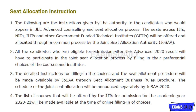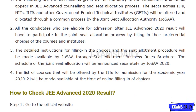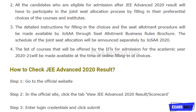The detailed instructions for filling choices and the seat allotment procedure will be made available by JOSAA. You have to check the detailed instructions and the brochure provided by them, which will include the rules, regulations, and limitations. Next, you can fill your choice of colleges and courses. The schedule of joint seat allocation will be announced separately by JOSAA for this year. The list of courses offered by IITs for the academic year 2021 will be made available at the time of online filling only.